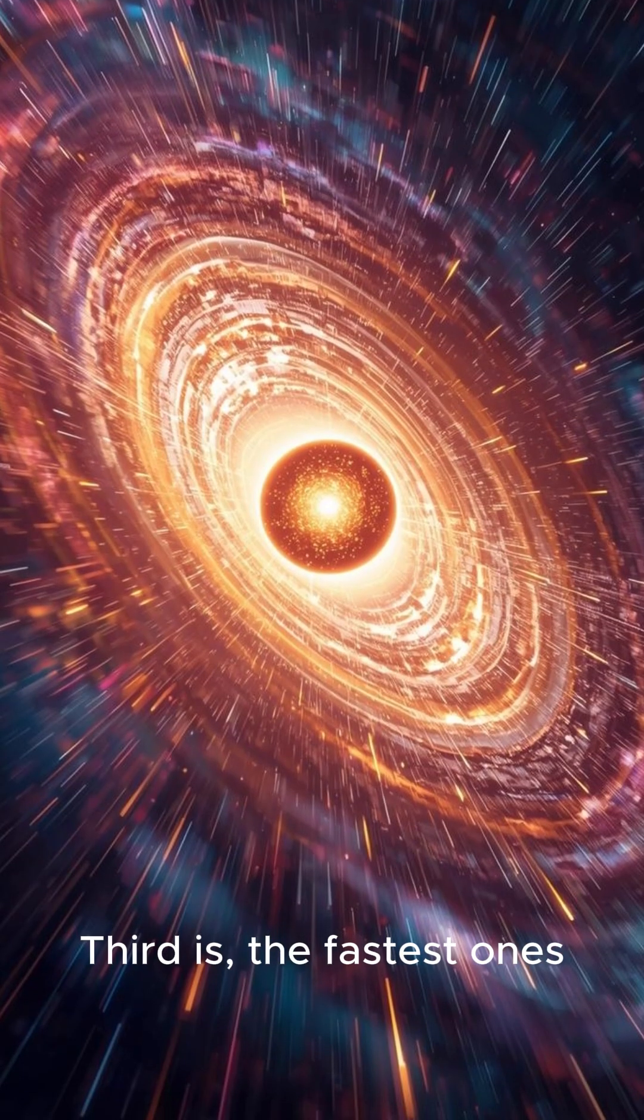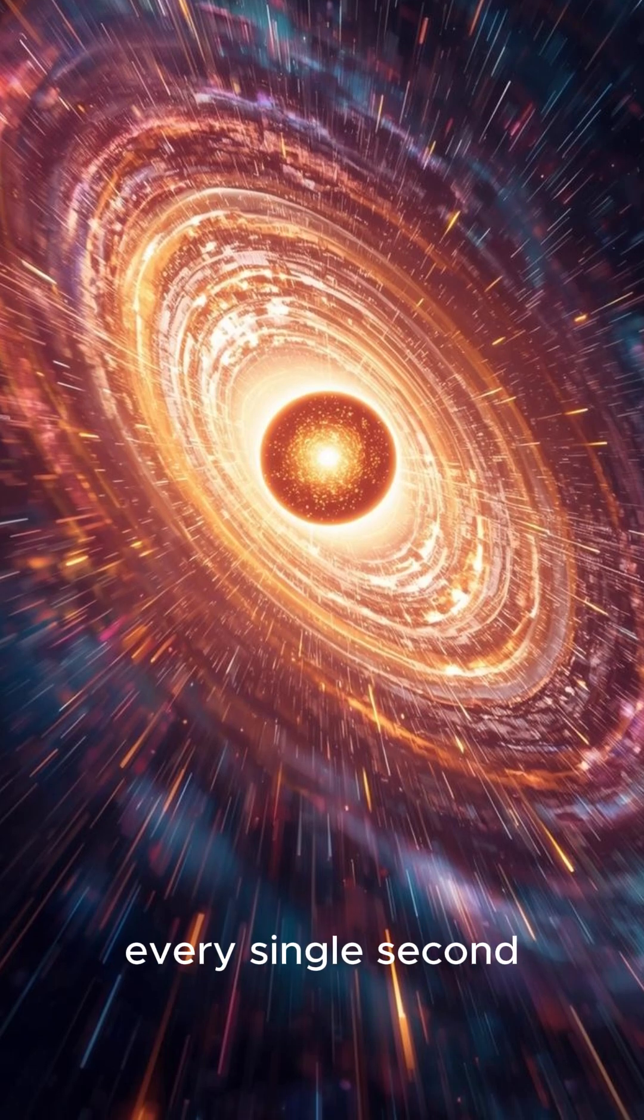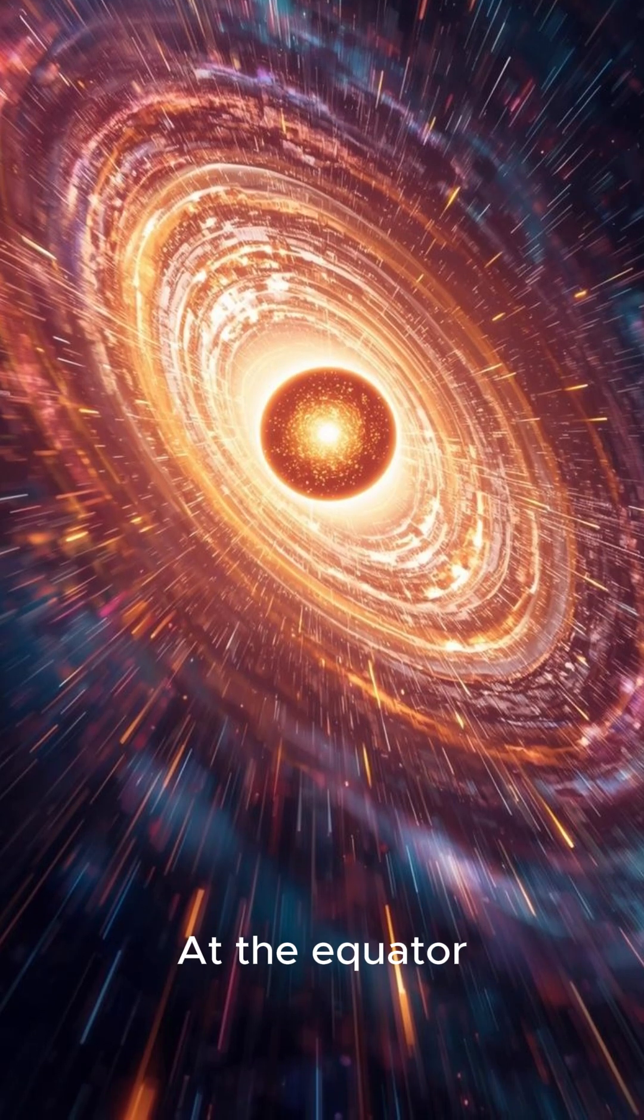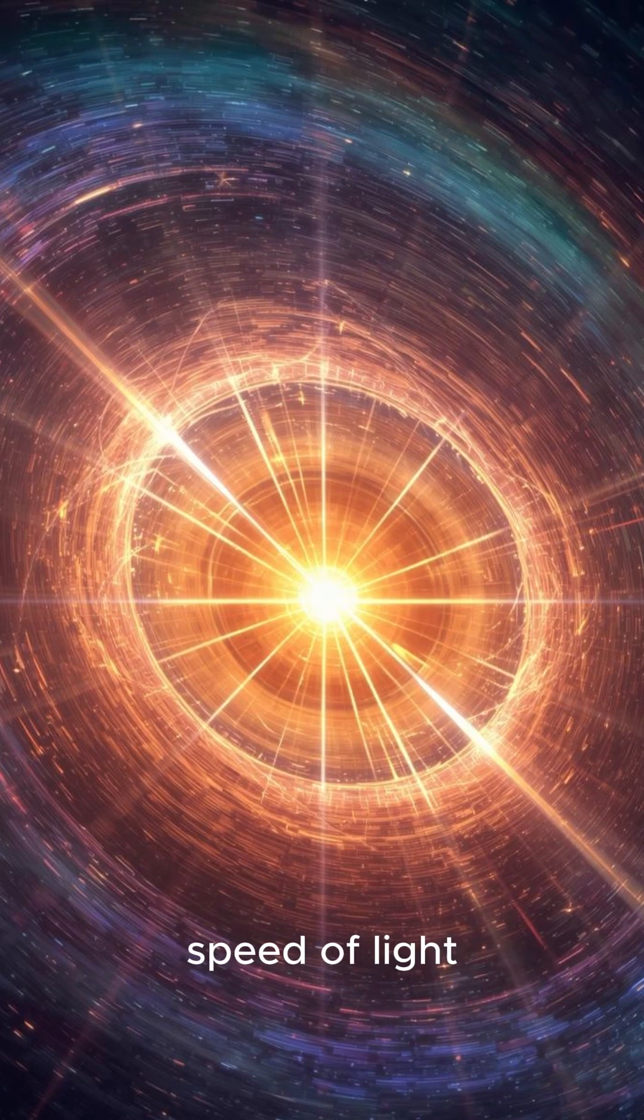Third, the fastest ones, called pulsars, can spin over 700 times every single second. At the equator, this means their surface is rotating at nearly a quarter of the speed of light.